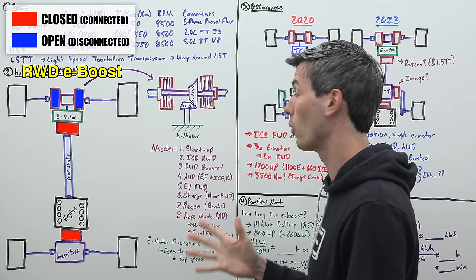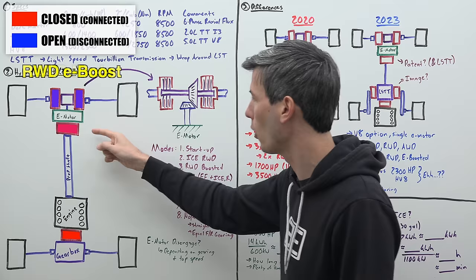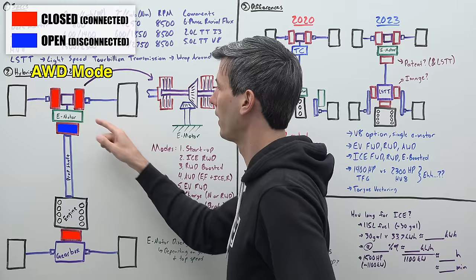We can also drive with all wheel drive. We're going to open up this clutch, engage these two, and so we've got our engine driving our rear wheels and then we've got our electric motor driving the front wheels.